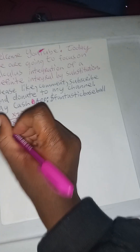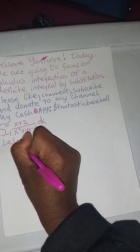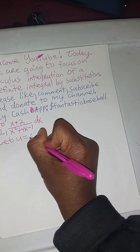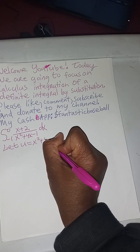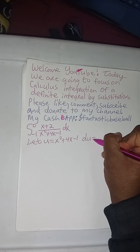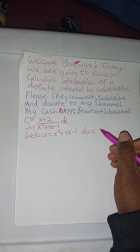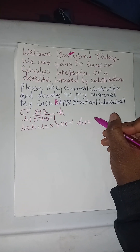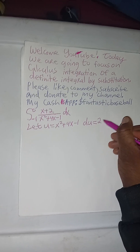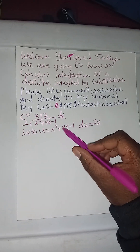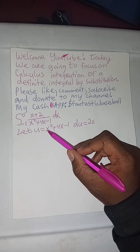So the first step is to let u equal x squared plus 4x minus 1. du will be represented by the derivative of x squared plus 4x minus 1. So du is going to equal 2x to the power of 1, because we take the exponent of 2 multiplied by the coefficient of 1.